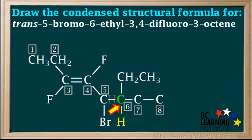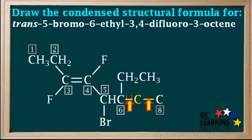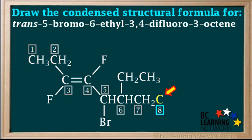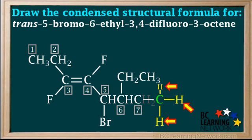Carbon number seven has two of its bonds filled, so it has room for two hydrogen atoms. In the condensed structural formula, we write H2 to represent the two hydrogen atoms, keeping in mind the two hydrogens are connected to carbon number seven. Lastly, carbon number eight only has one bond filled, so it needs three hydrogen atoms to fill the other three bonds. In the condensed structural formula, we represent the three hydrogen atoms by writing H3.